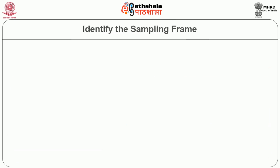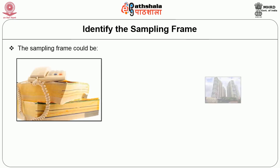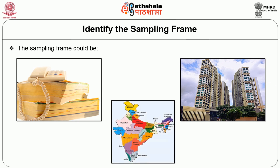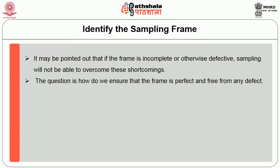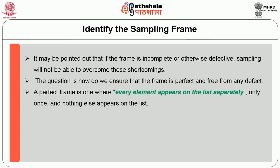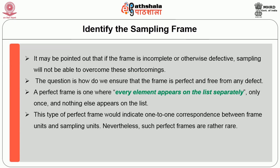The second step is to identify the sampling frame. The sampling frame could be a telephone directory, a list of blocks and localities of a city, a map, or any other list consisting of all the sampling units. If the frame is incomplete or otherwise defective, sampling will not be able to overcome these shortcomings. A perfect frame is one where every element appears on the list separately, only once, and nothing else appears on the list — indicating one-to-one correspondence between frame units and sampling units.